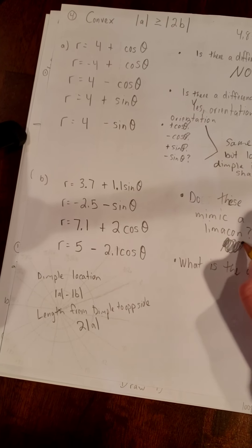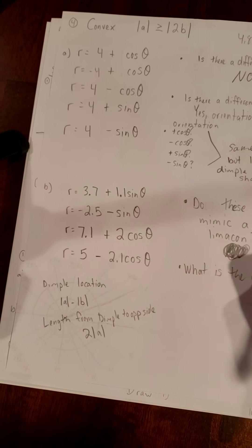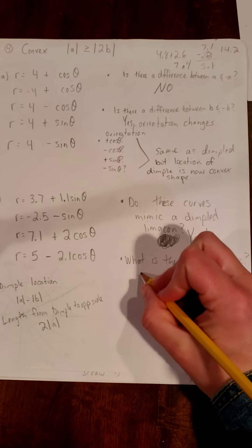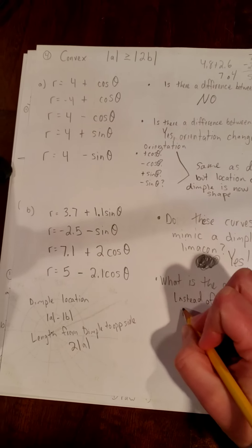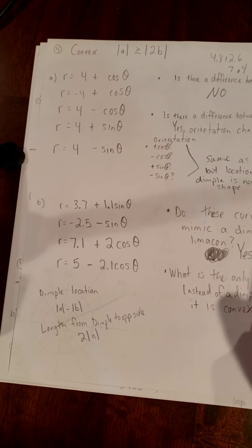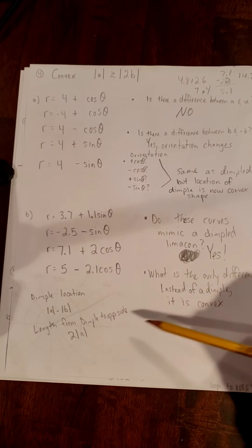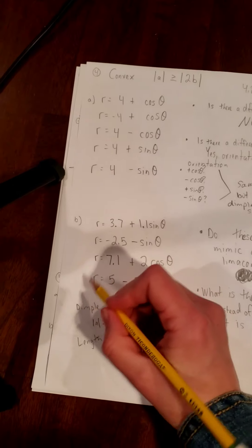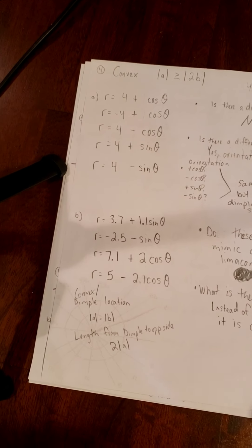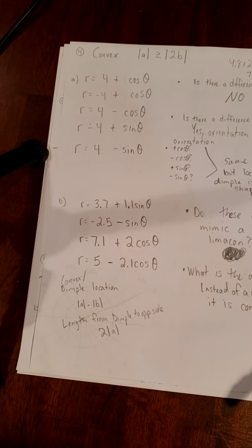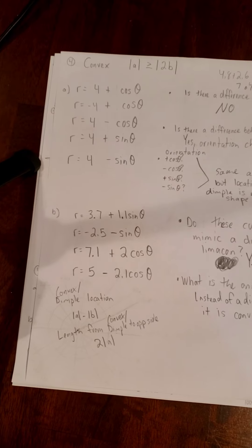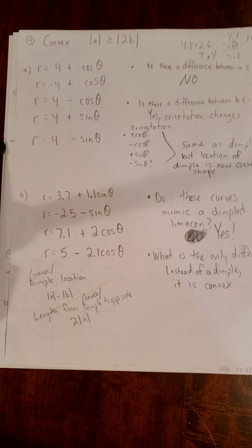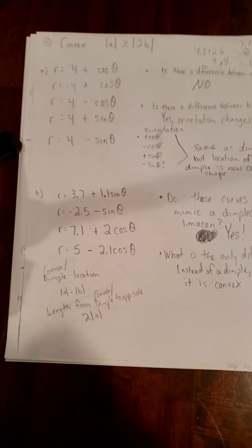Going back to our notes: do these curves mimic a dimpled limaçon? The answer is yes. What is the only difference? Instead of a dimple, it is convex — that's the only difference. The dimple/convex location is the absolute value of a minus the absolute value of b. The length from the convex location to the opposite side is two times the absolute value of a. The only difference is the shape going on there.